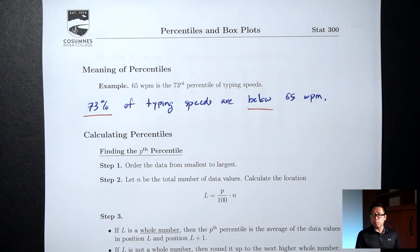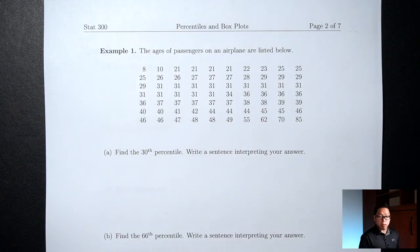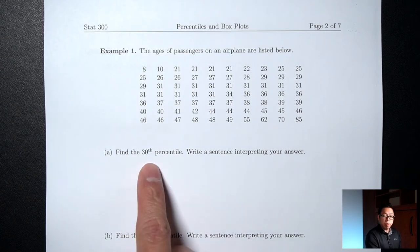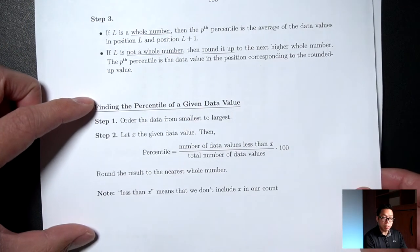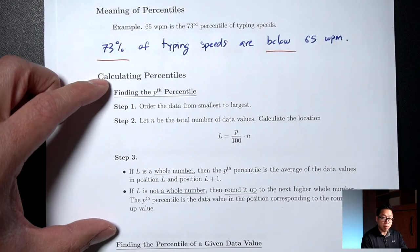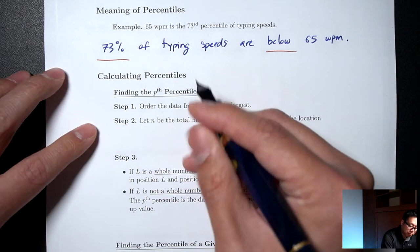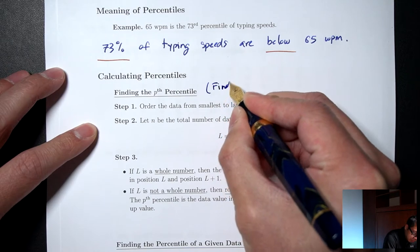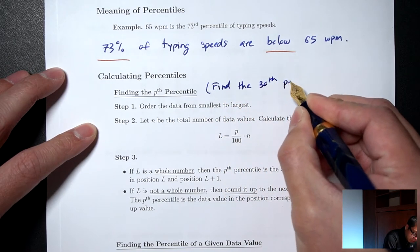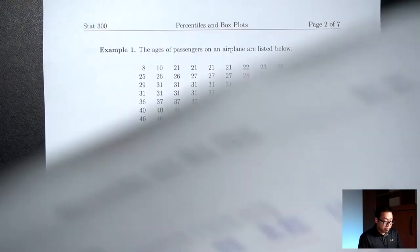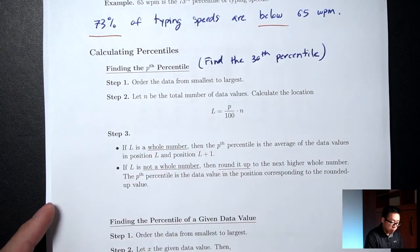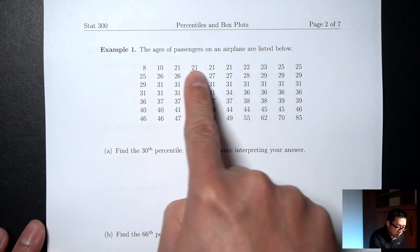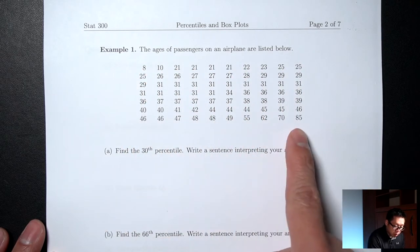On the rest of this page, I have the directions for how to calculate percentiles. Let me jump to example one. Here we have the ages of passengers on an airplane. Part A says find the 30th percentile. There are two sets of directions: one for finding the Pth percentile, and another for finding the percentile of a given data value. The data is already ordered from smallest to largest, so step one is done.